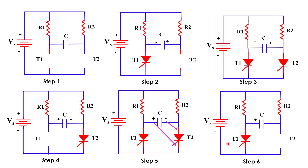Again we apply a gate triggering pulse to T1 thyristor and T1 starts conducting again. Current flows through T1 from two loops: loop 1 through R1 and T1 back to supply voltage, and loop 2 through R2, capacitor, and T1 back to supply voltage. This means we are back to the initial condition. So this is the complete working of Class C commutation.